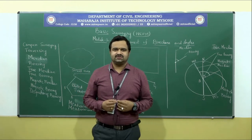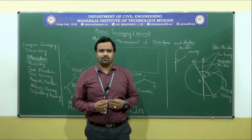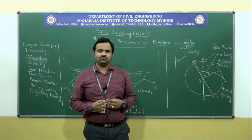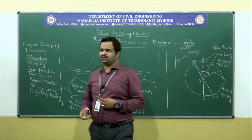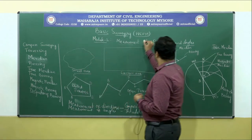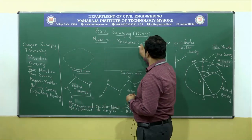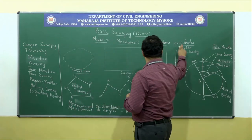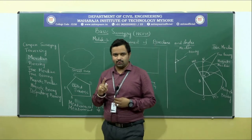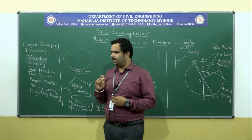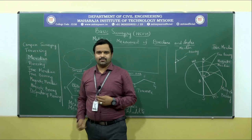In today's session, I am going to discuss about Module No. 2 of Basic Surveying with Subject Code 18CV35. Module No. 2 is Measurement of Directions and Angles, which is Unit No. 1, and Unit No. 2 is Traversing.